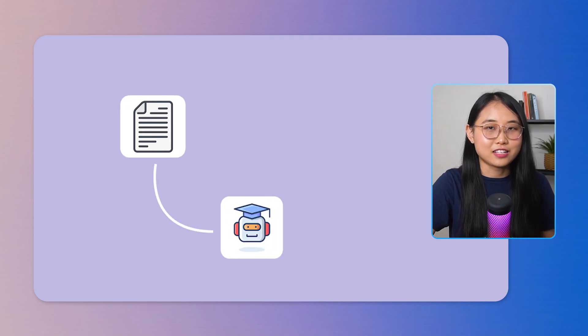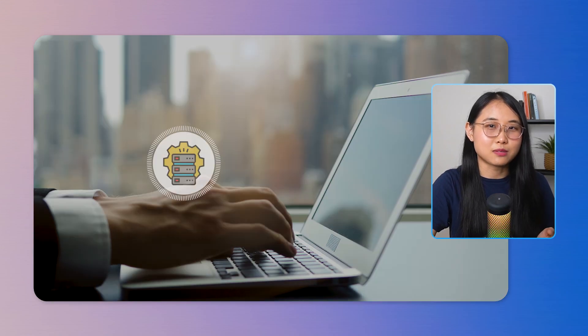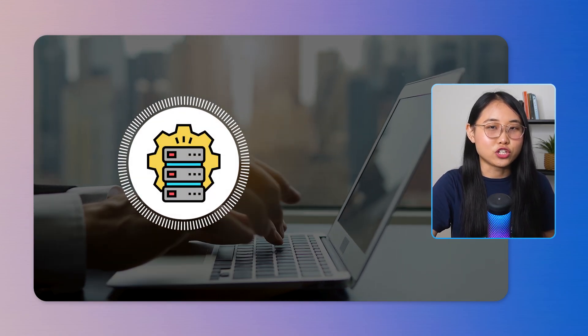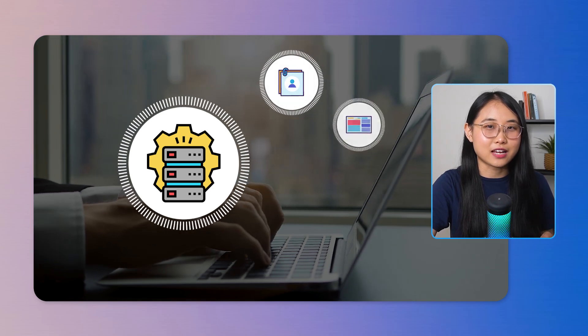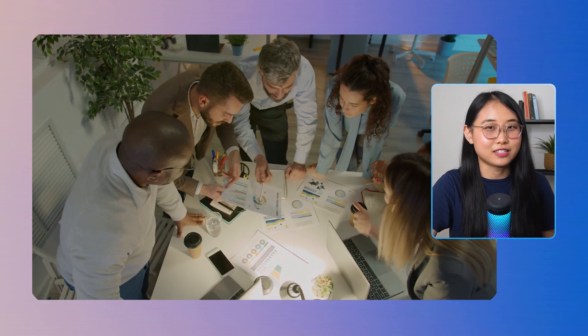Once you submit your prompt, the AI gets to work creating an application that fits your needs. After the application is generated, you'll be introduced to the customization process. This gives you the option to add widgets like user input, static text, image generation, and even a chatbot. You can also change the layout of your application to match your brand or personal preferences.